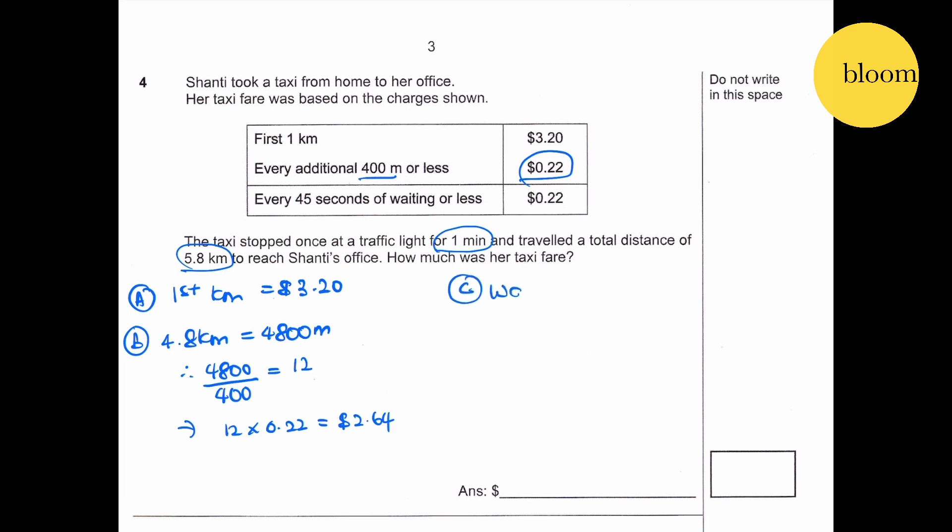Waiting time. Waiting time is 1 minute, which is 60 seconds, which is 45 seconds plus 15 seconds. So we have this will cost 22 cents, this will cost 22 cents, totally cost 0.44 cents.